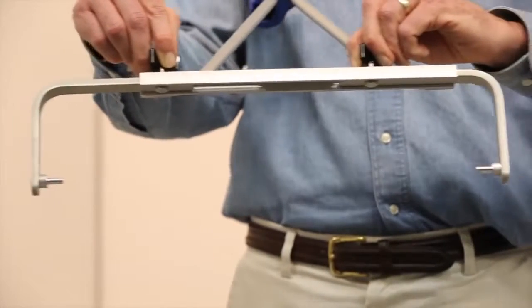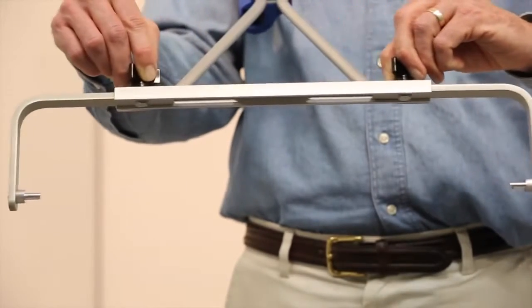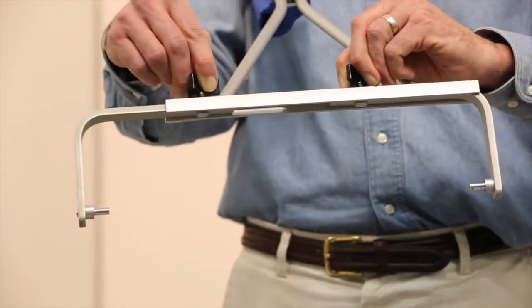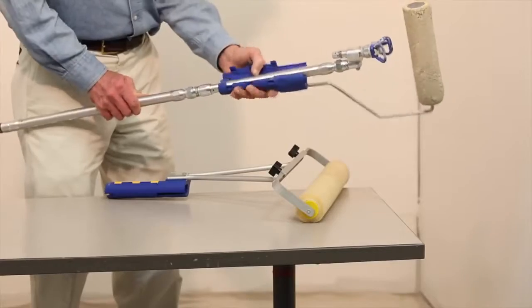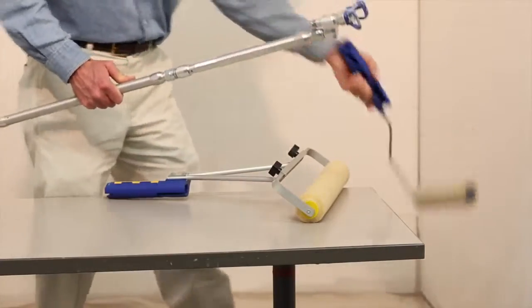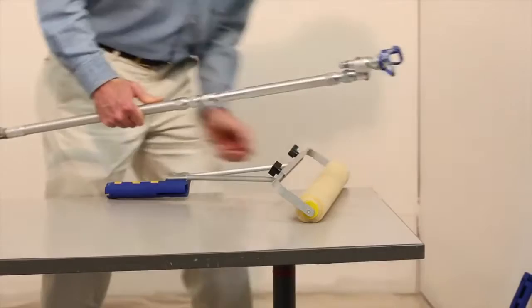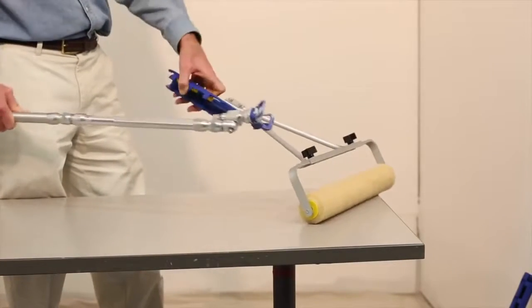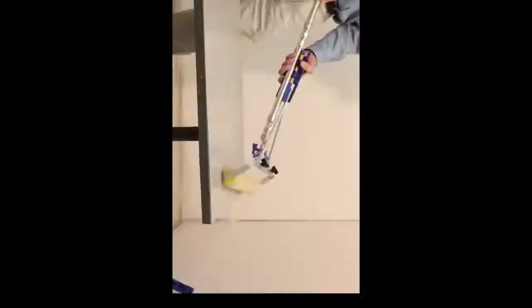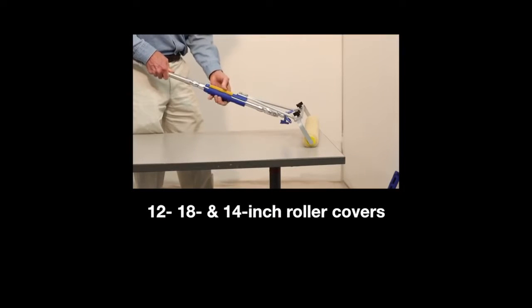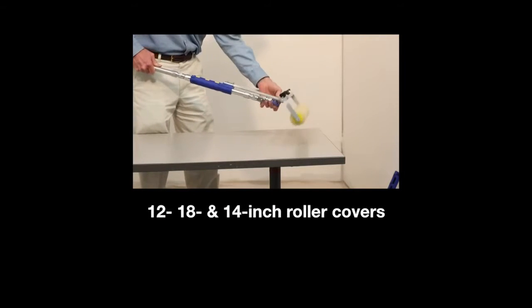The 18-inch adjustable version is available as just the handle or as a complete system. The handle is interchangeable with the 9-inch version. The 18-inch jet roller is used for larger areas and adjusts to hold 12, 18, and 14-inch roller covers.